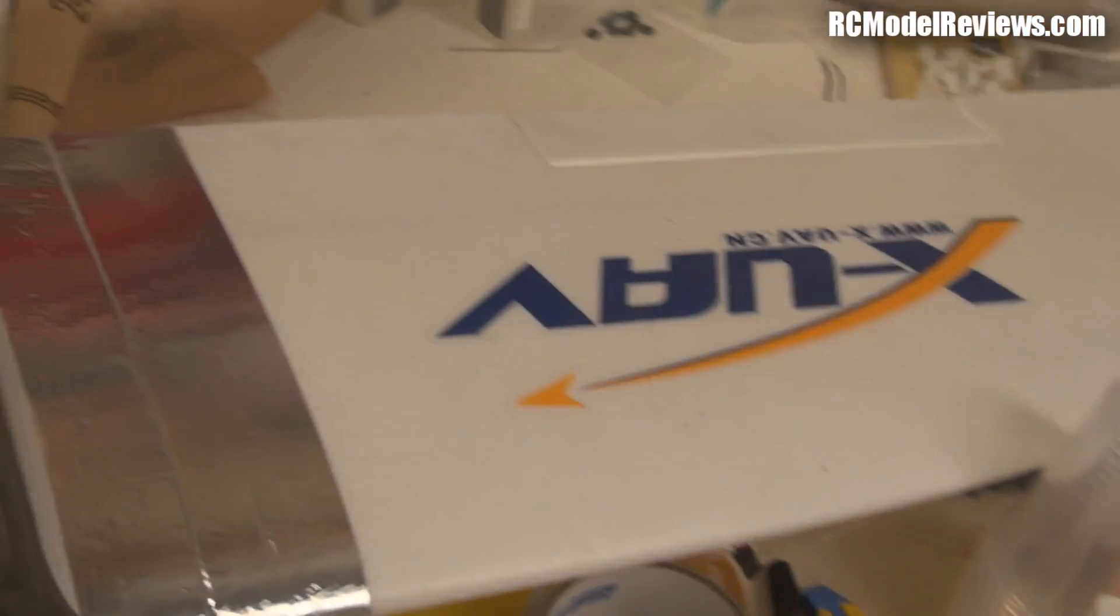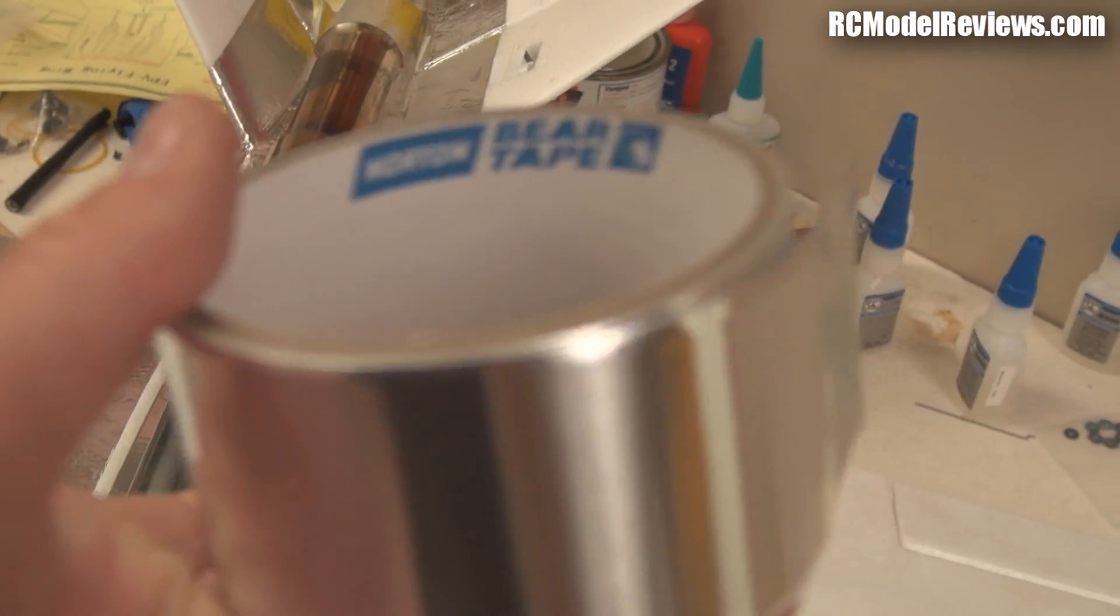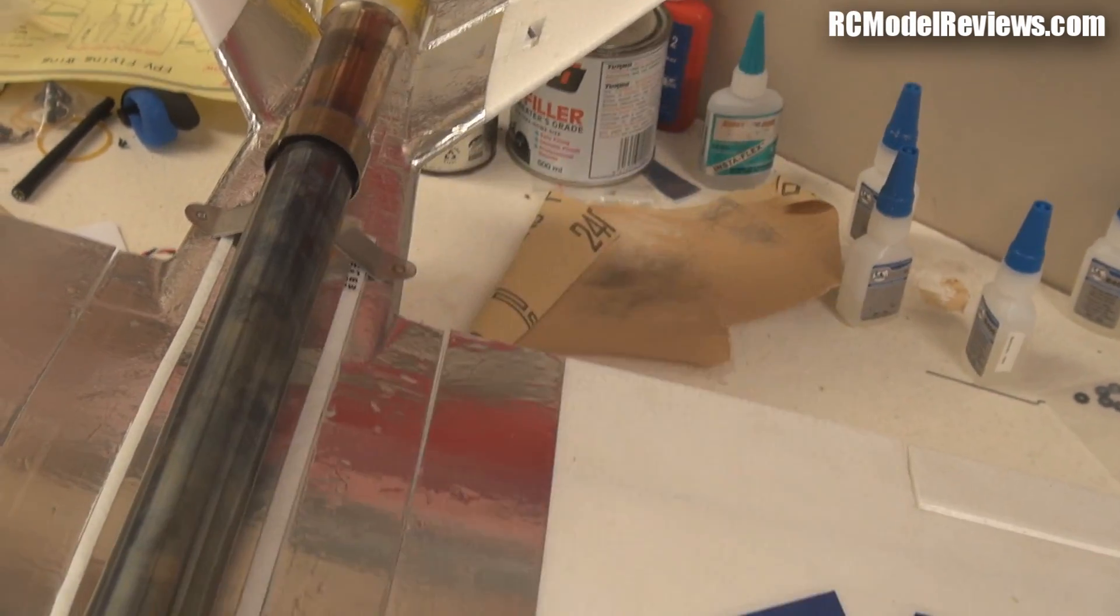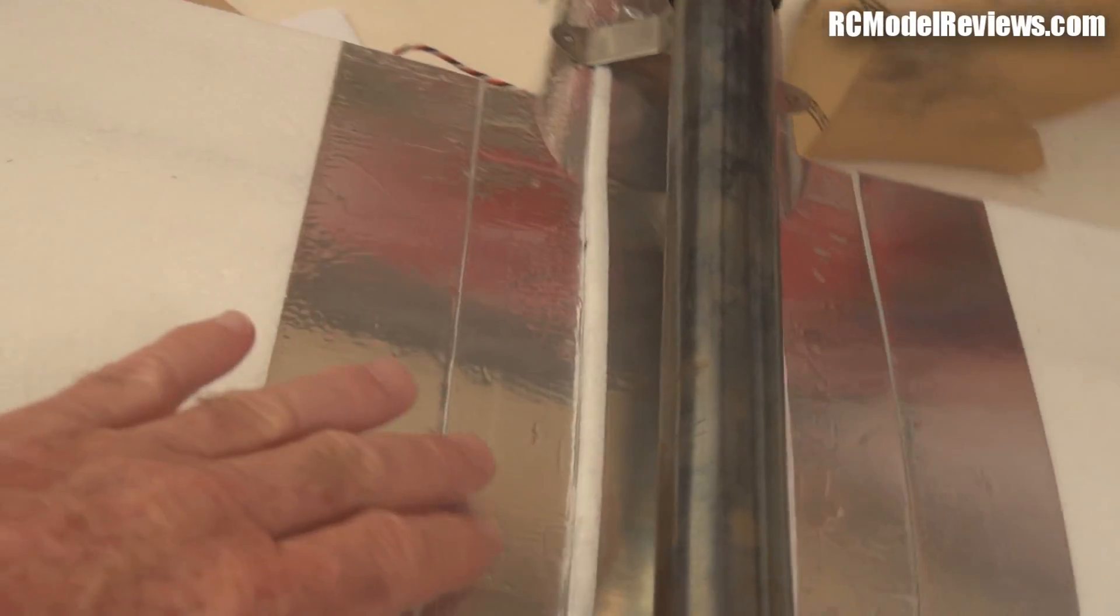This is the automotive foil tape, this brand, the Norton brand. It's quite a thick aluminum foil with an adhesive backing and it's really good at reflecting heat. So I'll put it over the center section here.